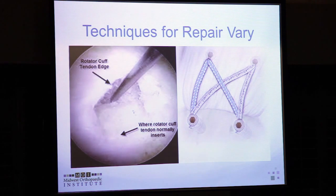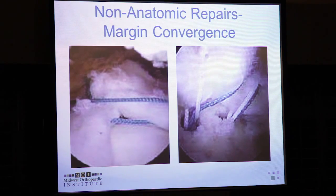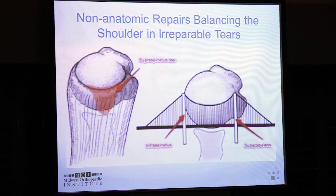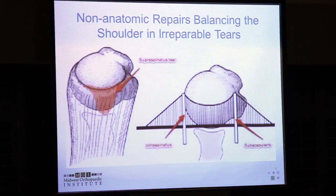An anatomic repair with a double-row construct brings the tendon right back to where it came from. Margin convergence pulls things together close to the greater tuberosity and puts them down — not anatomic. The suspension bridge technique for partial repairs pulls from the front and back to balance the function of the remaining rotator cuff and help the patient elevate their arm.